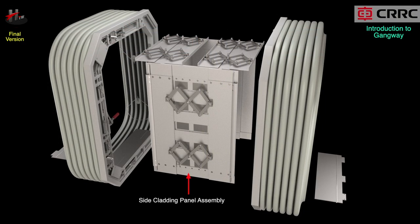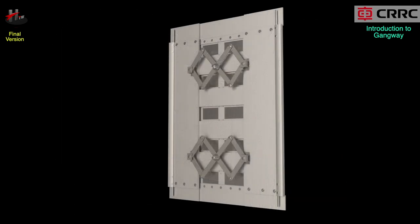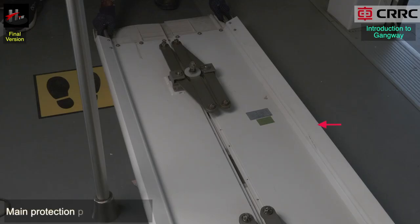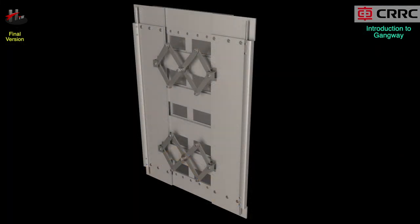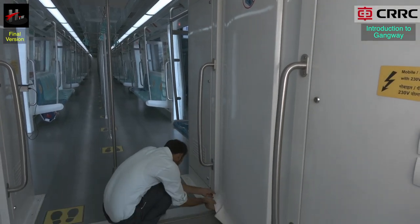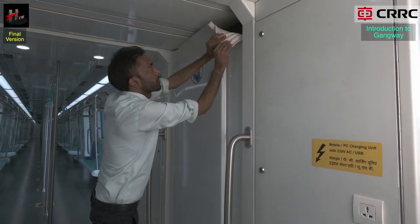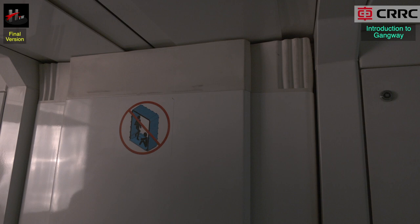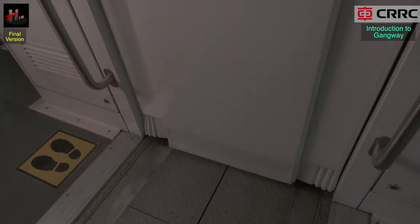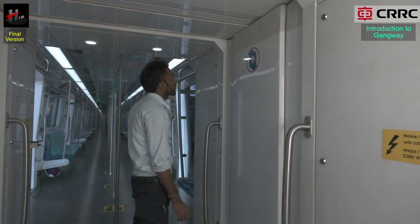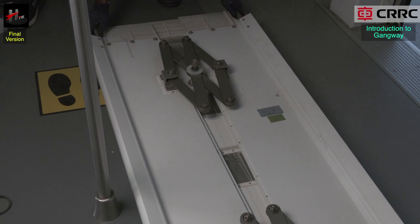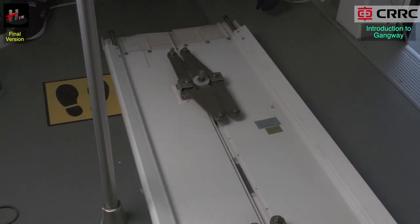The side cladding panel assembly includes the main protection panel assembly and the connection rod assembly. It is mounted on the end of the car body and is equipped with locking and unlocking bracket mechanisms — two on the upper side and two on the lower side. These locking mechanisms are operated by the square key. The function of the side cladding panel assembly with the connection rod assembly is to expand when the train is moving on curved terrains and contract when the train comes back on a straight line.